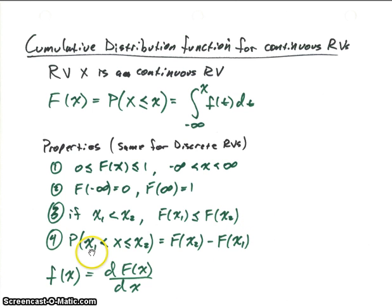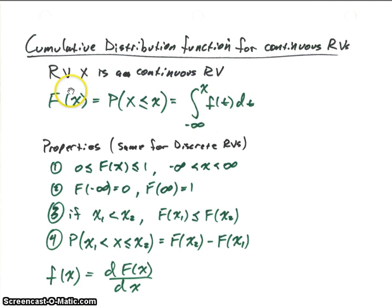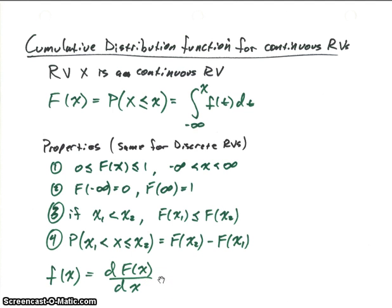If we want to find the probability that our random variable will be between x1 and x2, we evaluate our function at x2 and subtract the function evaluated at x1. Now, the density function f(x) is the derivative of the cumulative distribution function F(x), since F is defined as the integral of f. So the density function is the derivative of our cumulative distribution function.